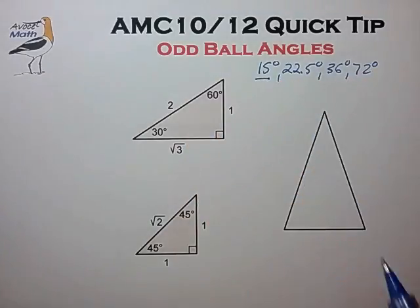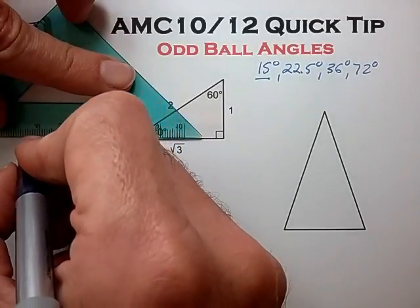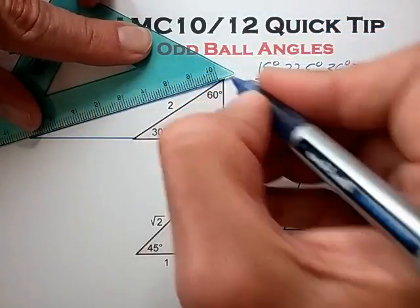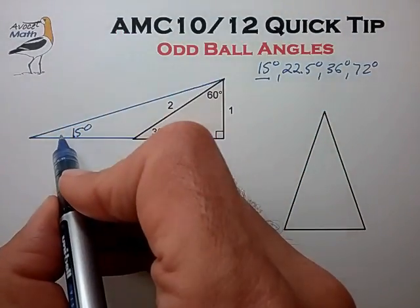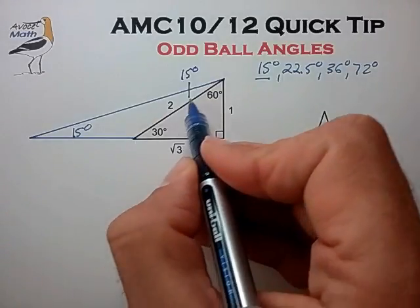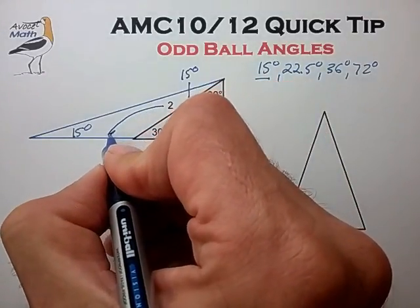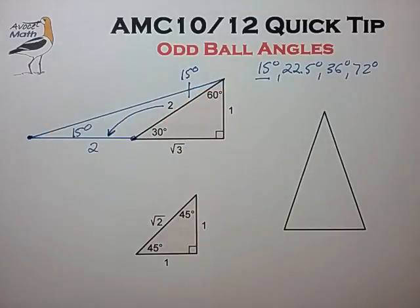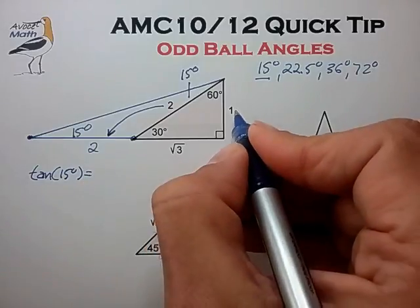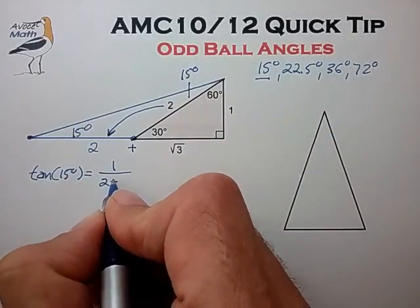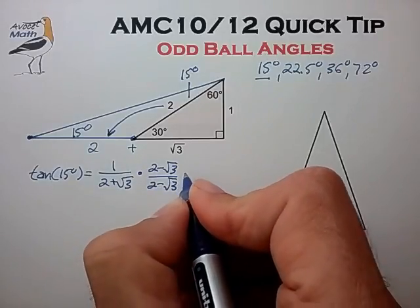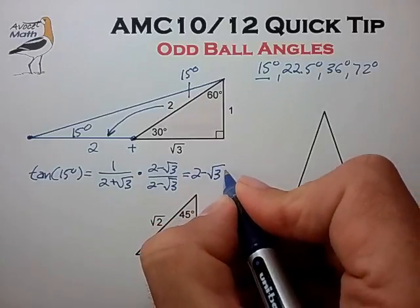Let's do the 15 degree angle first by extending the base of our 30-60 degree right triangle out to form a 15 degree angle with the base. We know that these angles — 15 plus this angle — have to add to 30, which makes this a 15 degree angle. Now this is an isosceles triangle, so the side length of 2 transfers to this segment length. We can quickly write out the tangent of 15 degrees as the opposite divided by the adjacent, and rationalize the denominator to find this equals 2 minus root 3, which is approximately 0.25.